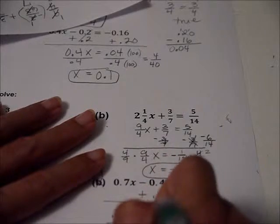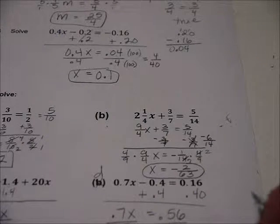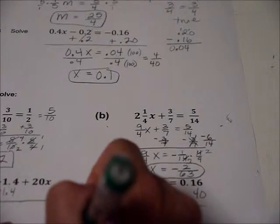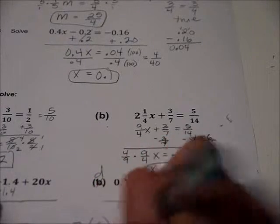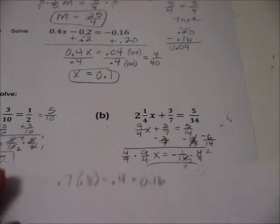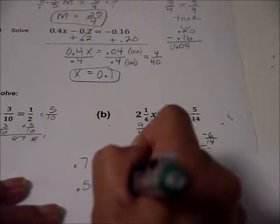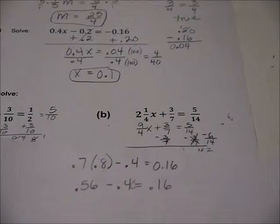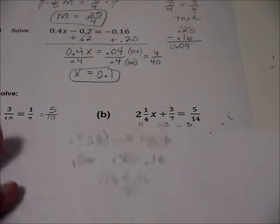And let's go ahead and check that. I'm looking for another scratch paper I haven't used yet. 7 times 0.8 minus 0.4 equal 0.16. All right, let's see. 7.7 times 0.8 is 0.56 minus 0.4. Does that equal 0.16? Well, that's 0.40, okay? And that helps to look at it that way. So yes, 0.16 equals 0.16. True, we got the right answer.